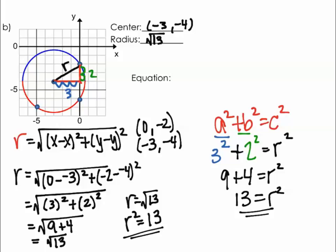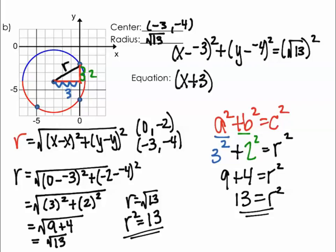We have everything we need now to pop those into our equation. So we have x minus negative 3 squared plus y minus negative 4 squared equals my radius, which is the square root of 13, squared. And this is coming from my equation that's on the top of your note paper. Clean it up, make it look nice and pretty. x plus 3 squared plus y plus 4 squared equals 13. And some of you will jump straight to that answer, and that's totally fine.